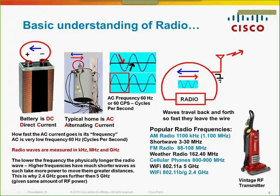AC is way down at 60 hertz — almost in the audible range. In fact, if you listen to fluorescent lights, you can actually hear that hum. Radio waves are a specific size: the lower the frequency, the longer the waves; the higher the frequency, the shorter the waves. Radio waves are measured in kilohertz, megahertz, and gigahertz — just how many cycles per second.